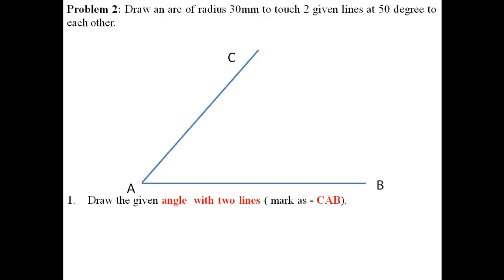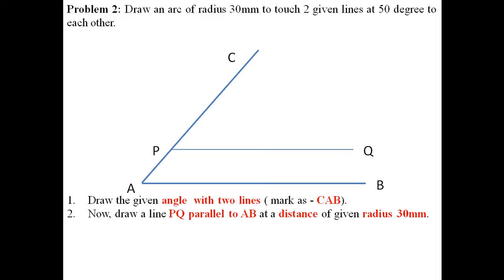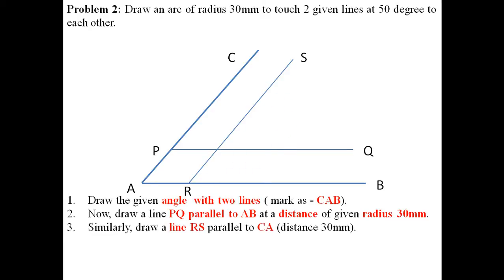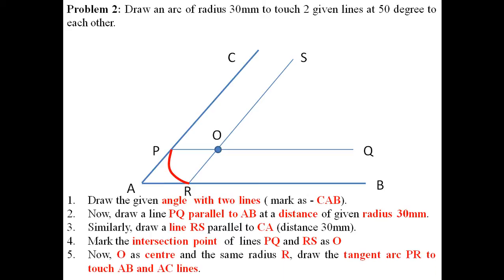The next problem is to draw an arc of radius 30 mm to touch two given lines at 50 degrees to each other — the lines are not at right angles but inclined at 50 degrees. Draw the given angle of 50 degrees with lines marked C and B. Draw a parallel line PQ to AB with a parallel distance of 30 mm. Similarly draw a parallel line RS to AC with a parallel distance of 30 mm. The intersection of PQ and RS is point O. With O as center and OP or OR as radius, draw a tangent arc to touch lines AB and AC.